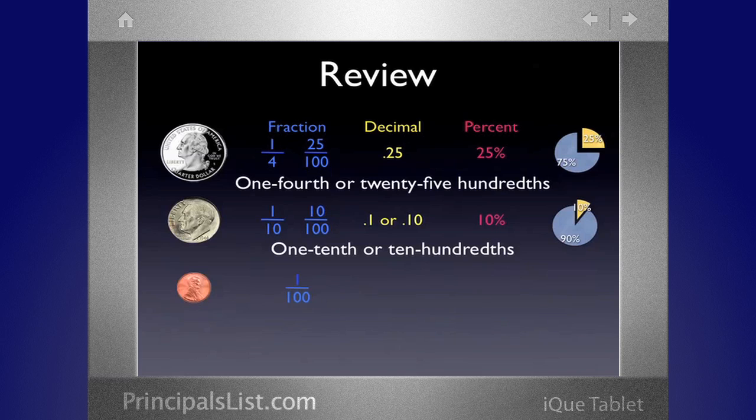And one penny we said was one out of a hundred or one-hundredth. Notice how the decimal and then a zero and then a one versus above being decimal one. Oh, that's tricky. Yeah, it's tricky. And one cent, or I'm sorry, one percent. Okay. Alright. That's just one out of a hundred.